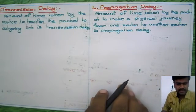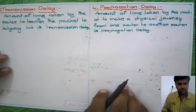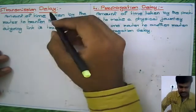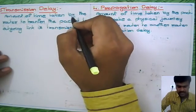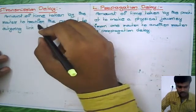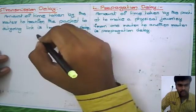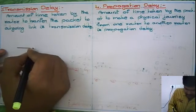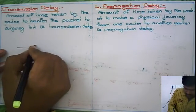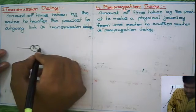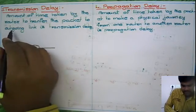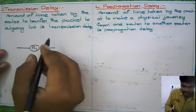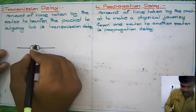The next one is transmission delay. Transmission delay is the amount of time taken by the router to transfer the packet to the outgoing link. To understand this, assume this is router one, and this is the outgoing link as mentioned in the definition.